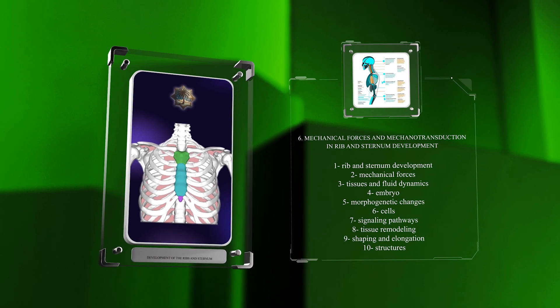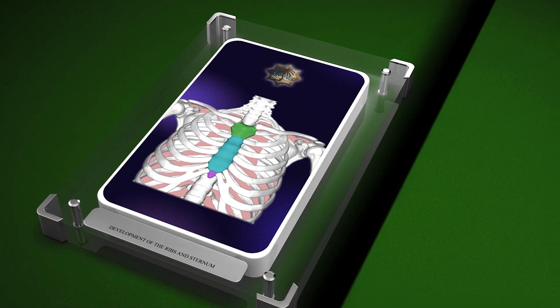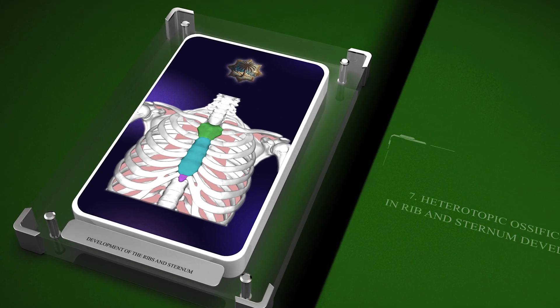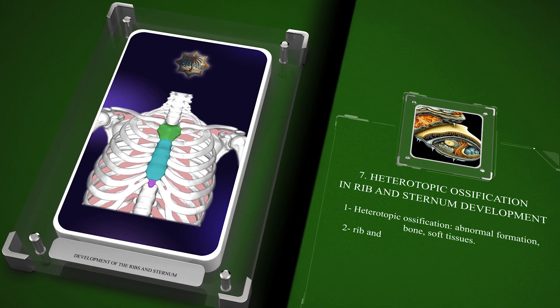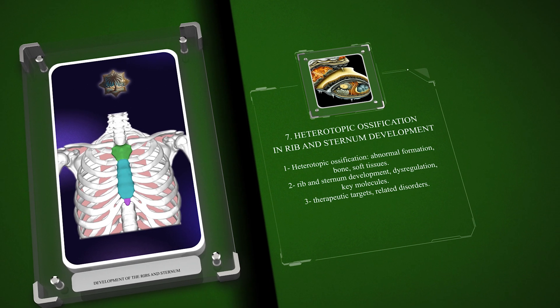Heterotopic ossification is the abnormal formation of bone in soft tissues. It can occur during rib and sternum development due to dysregulation of key molecules. Understanding its mechanisms may help identify therapeutic targets for related disorders.